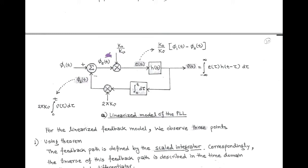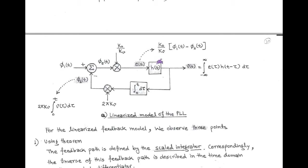For the forward path, the error signal equals (K0/kV)·(φ1 − φ2), where K0 = K_M·kV·AC·A_V is the loop gain parameter. The angle φ_E = φ1 − φ2, and after multiplying by K0/kV, we get the error signal. The forward path also contains the loop filter with impulse response h(t); its output is the convolution of the error signal with h(t). The main function of the feedback loop is to adjust φ2 = φ1 in order to achieve zero error signal.